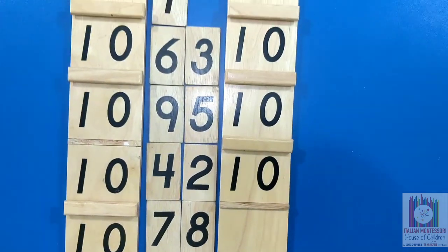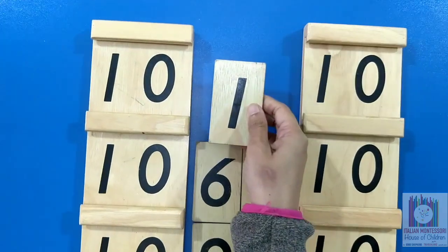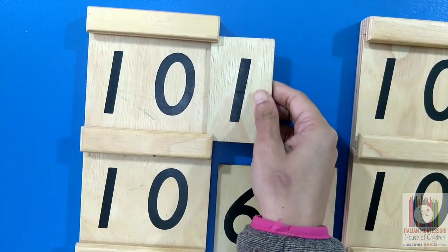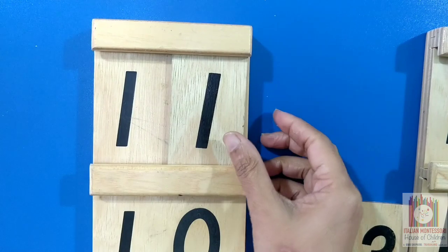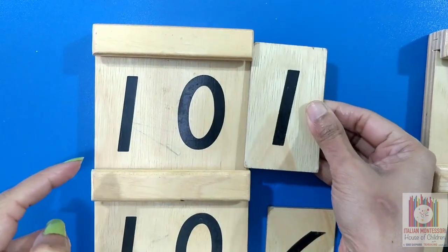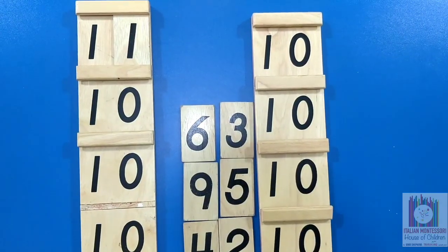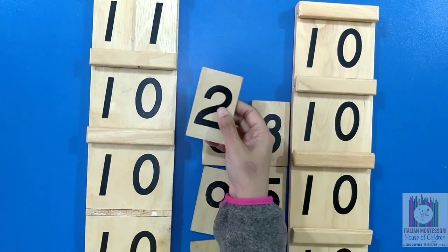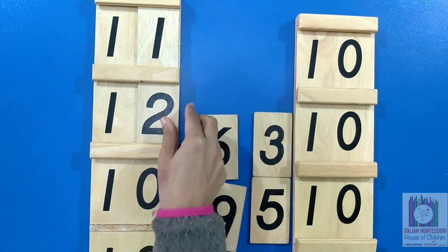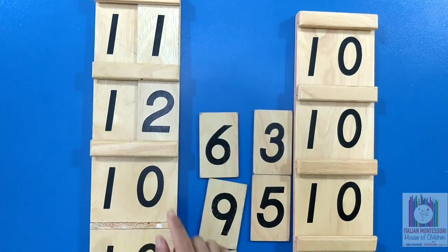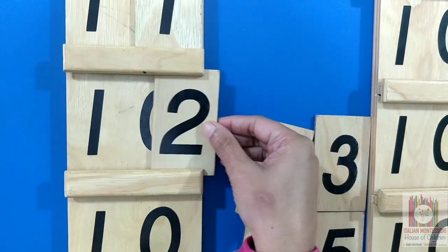The child forms the number 11 by sliding number 1 over the 0 in the first 10. This shows him concretely that the number 11 is made up of 10 and 1. Then he forms 12 by sliding the number 2 over the 0 in the second 10. This shows him concretely that the number 12 is made up of 10 and 2.